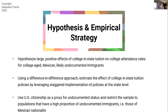Another clarification: I use U.S. citizenship as a proxy for undocumented status, because in most publicly available data you do not see whether someone is directly undocumented. So I proxy for that by seeing whether or not they are a citizen. To further increase accuracy, I restrict the sample to populations that have a high proportion of undocumented immigrants — i.e., those of Mexican nationality.